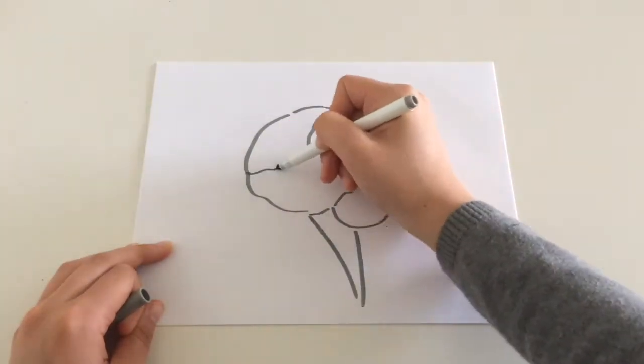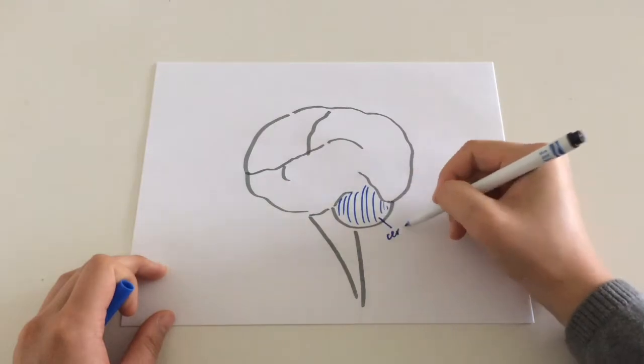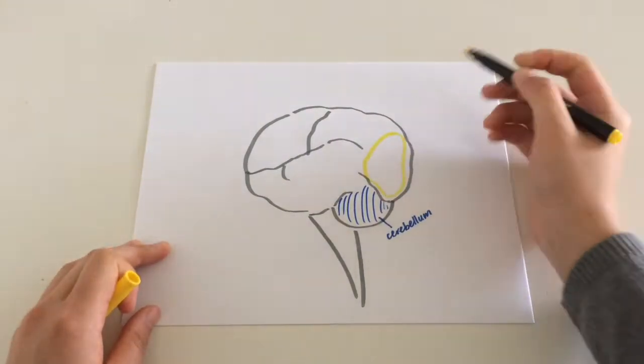Neuroscience is the study of the nervous system, which largely involves the brain. Understanding the brain's anatomical structure is crucial towards mapping out the functions of each part.